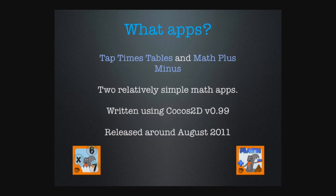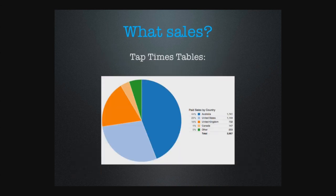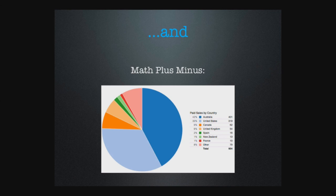I've got two fairly simple apps. The icons you're seeing there are probably about version 10 of the icon. They've paid for some furniture and holidays and stuff like that. For Times Tables, these are just paid sales - they don't include any promotional free things. I've actually never set Times Tables to free. I do have a light version which does maybe a hundred downloads a day with maybe a couple of paid sales a week out of that.